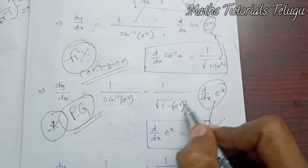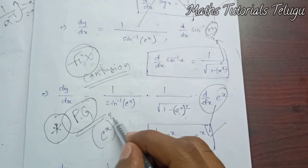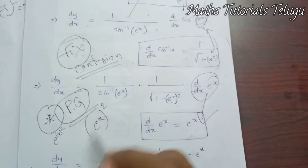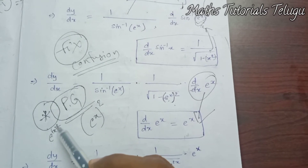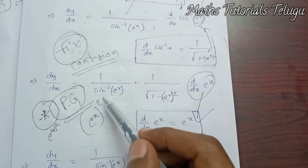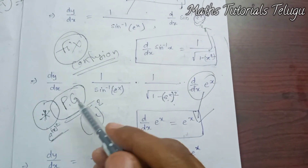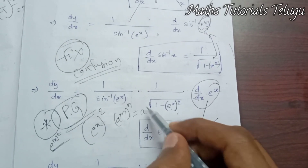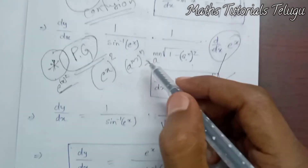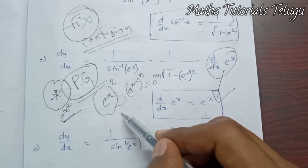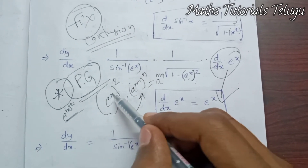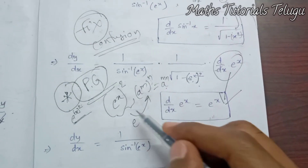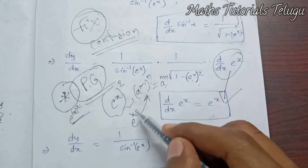Now, e power x whole square — this is an important point. Using the formula a power m into n, e power x whole square becomes e power 2x. So 1 minus e power x whole square becomes 1 minus e power 2x. This formula a power m into n is key here.